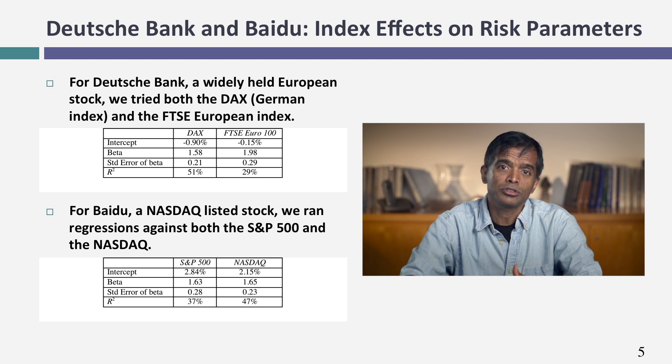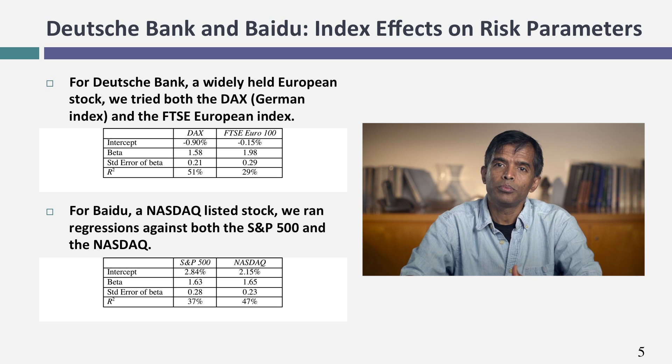I don't trust either of those numbers. Building on this concept, let me take Deutsche Bank and Baidu and show how different their betas can be depending on the choices I make. With Deutsche Bank, running the regression against the DAX gives a much higher R-squared and a different beta than running it against the FTSE, the European index. With Baidu, I get very different betas using the S&P 500 versus the NASDAQ. When you see a regression beta page that might look like a fact, there are lots of choices that went into that page. I tell people: give me access to a Bloomberg terminal for 30 minutes and tell me what beta you want, and I will find a way to deliver a printed regression beta page backing up that number. I just don't trust regression betas — they're statistical numbers, and noisy ones at that.